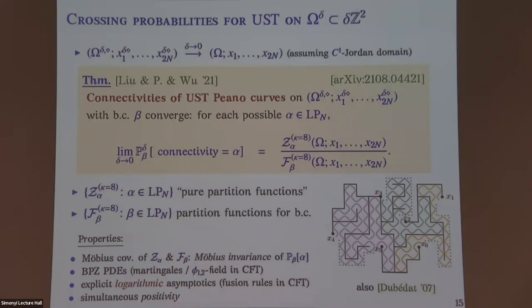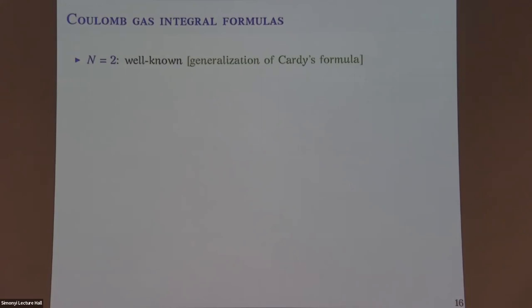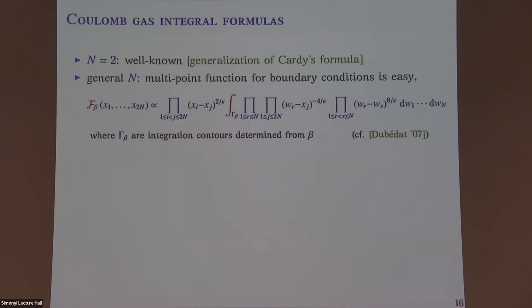These are the functions and their properties. For the FK Ising case (κ = 4), F has a special formula: it's a spin Ising correlation function with bulk points taken to the boundary so that every other point is even/odd, labeled by the pairing β — this is obviously positive. For other κ values there's a less explicit formula. The fusion rules for the Z and F functions are: taking two adjacent paired points together gives a similar function with fewer points (removing that connection); fusing non-connected points gives zero. These properties uniquely determine the functions along with the BPZ differential equations.